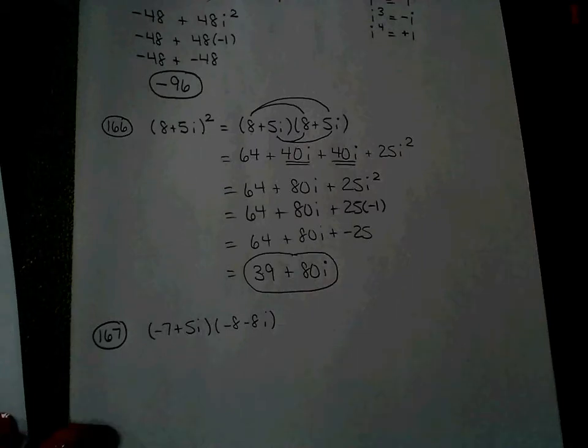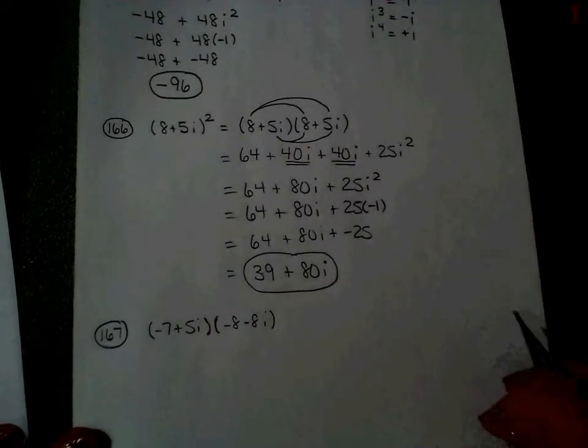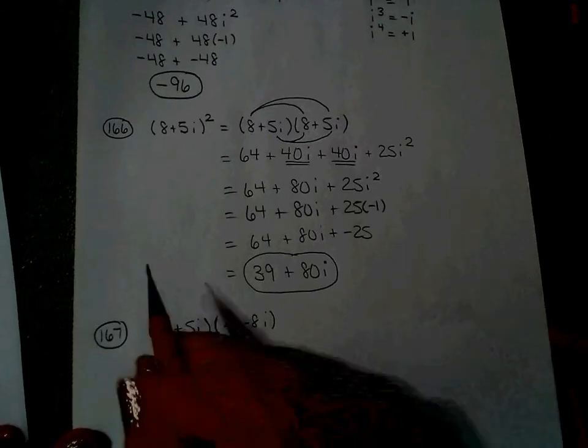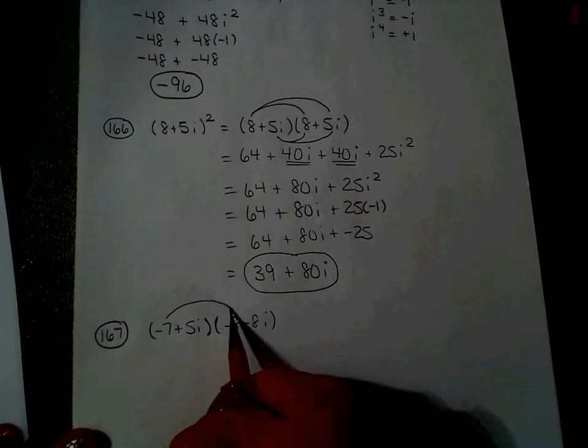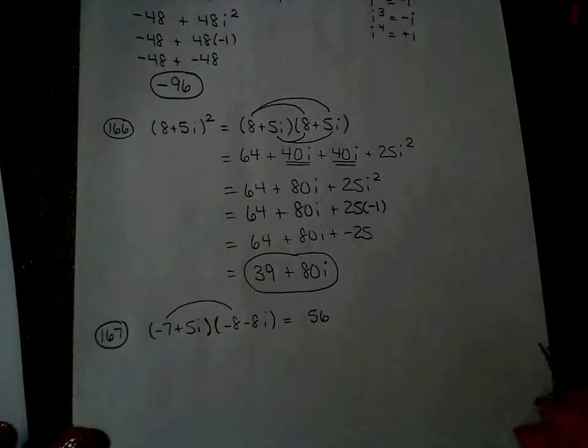So this is a FOIL because there's nothing in between the parentheses, so I'm going to do first, outer, inner, last. Negative 7 times negative 8 is positive 56. A negative times a negative is a positive.